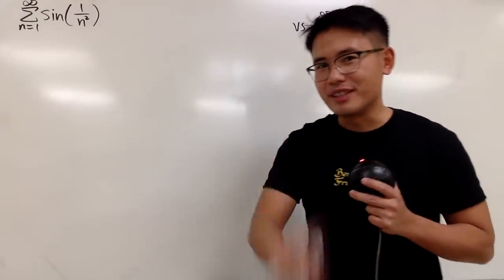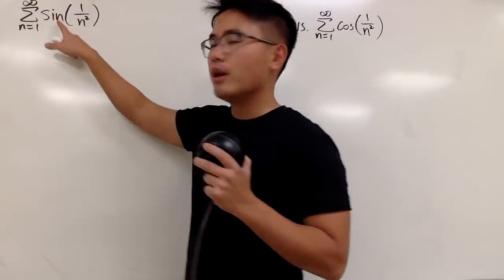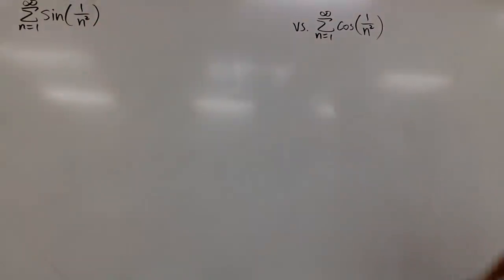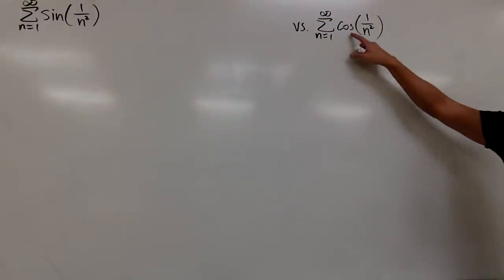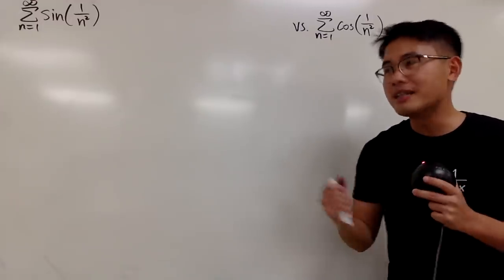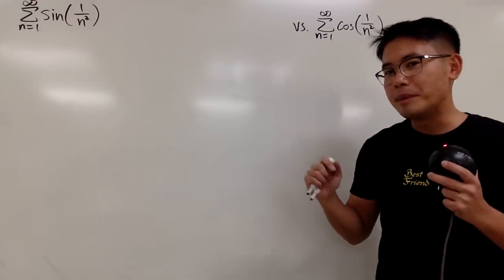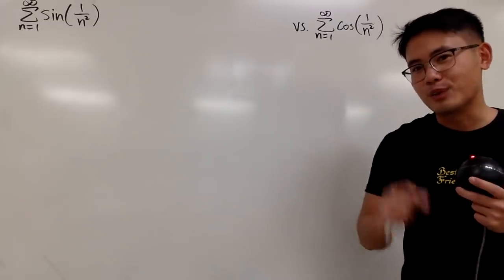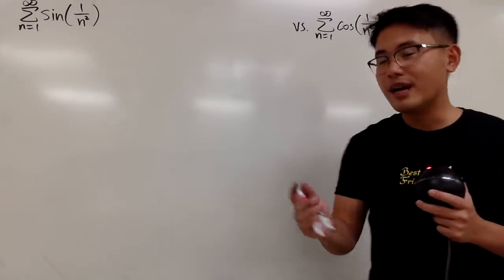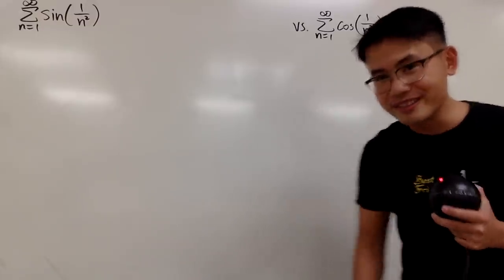We have two infinite series. The first one is the series as n goes from 1 to infinity of sine of 1 over n squared, and the second one, we have cosine instead. So do you think that they both converge, or they both diverge? Maybe one converges and the other one does not. You should pause the video and try to do the easier one first.